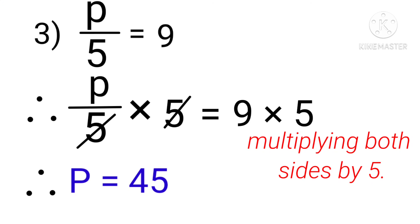The third equation, p upon 5 equals 9. In the next step, multiplying both sides by 5, we get p equals 45 as an answer.